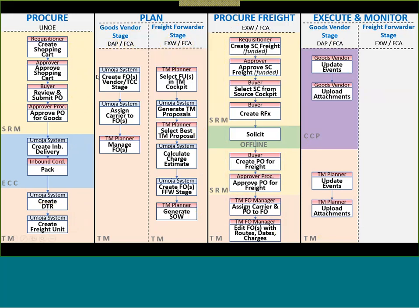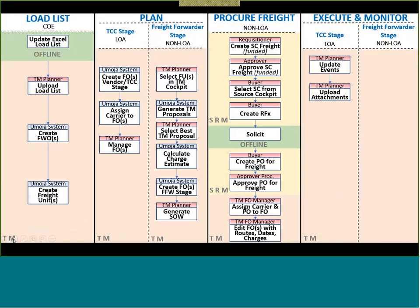Take a look at this mind map for the UNOE scenario. Today's COE scenario looks very similar, especially for the last three columns for planning, procurement, freight, and executing and monitoring. But now the COE scenario starts with what we call a load list - uploading an Excel load list where we would have the cargo load list for contingency-owned equipment, and how we would load that list to TM. That would automatically generate a forwarding order and a freight unit, and depending on the Incoterm - LOA scenario or non-LOA - how that would work in the system.